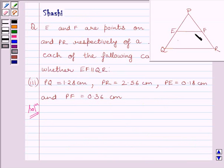Now, we have to find if EF is parallel to QR. So first of all, we will find the ratio PE upon EQ. For that, we will have to find EQ. We know EQ is equal to PQ minus PE.